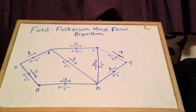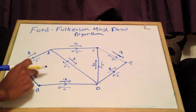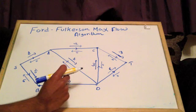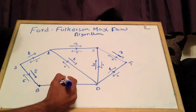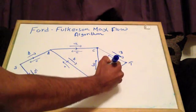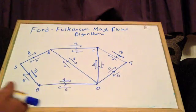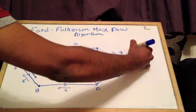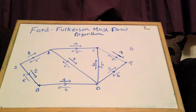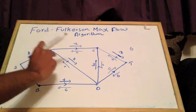So we send 6 along that path. The flow so far is 6. Now we can use inspection to find a different flow augmenting path.